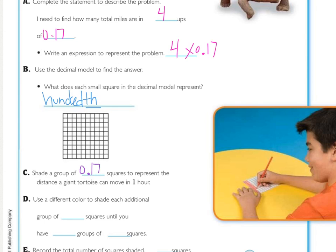Take your first color and shade in 17 of the little squares, 17 hundredths. So there's my first group, and if you left the three at the bottom down here and colored those, that's okay, as long as it's 17 hundredths.